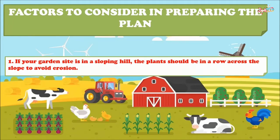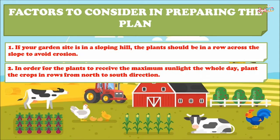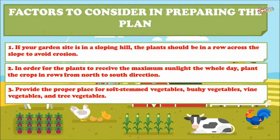If your garden site is on a sloping hill, the plants should be in rows across the slope to avoid erosion. In order for the plants to receive maximum sunlight the whole day, plant the crops in rows from north to south direction. Provide the proper place for soft stem vegetables, bushy vegetables, vine vegetables, and tree vegetables.